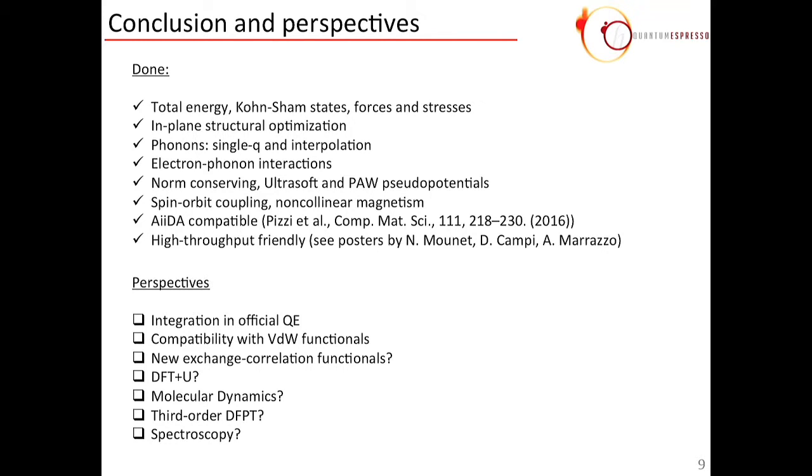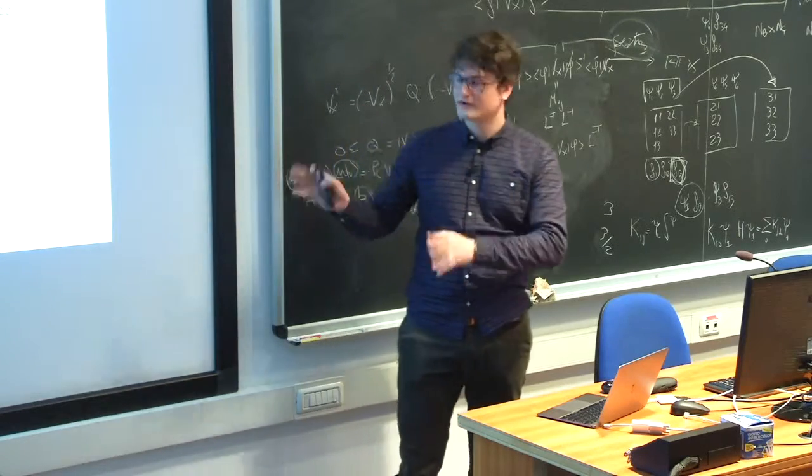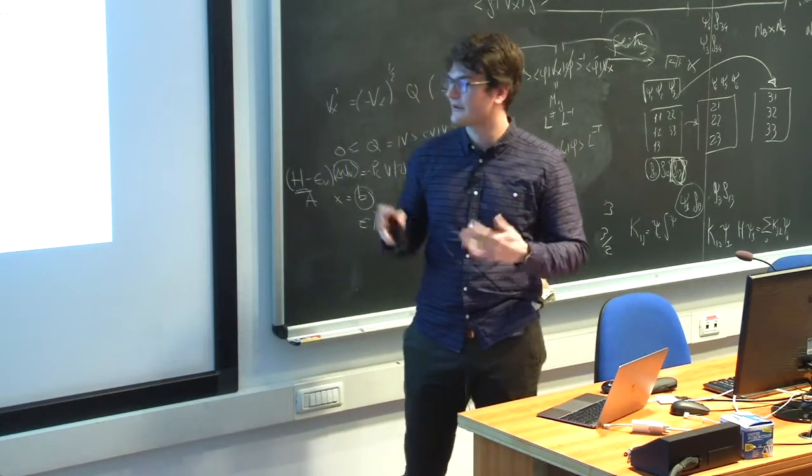In terms of perspectives, we intend to integrate this in a future Quantum Espresso release if the community is interested. I still need to check more thoroughly compatibility with van der Waals functionals, which is not a problem when you use a monolayer, but when you use heterostructures, it might be important. And, then is a list of things that Quantum Espresso does and that I have not looked into in details. It is not necessarily a problem. It may not even make sense to talk about 2D cutoff and those things. It's just a list that we might think about.